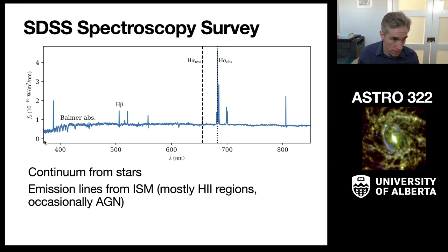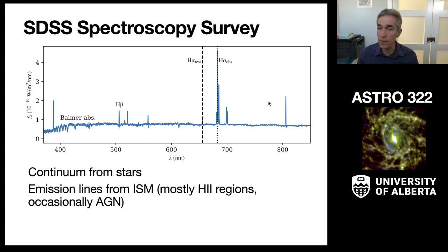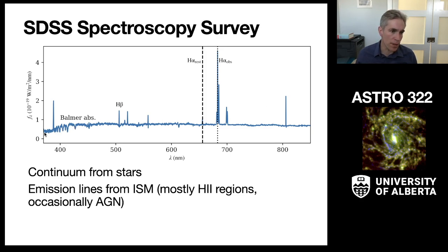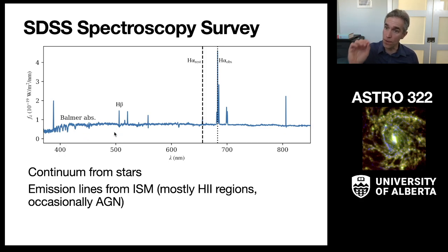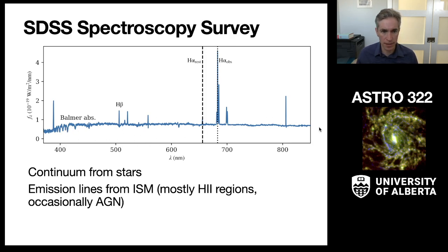This is the optical section of the spectrum, with flux density in watts per meter squared per nanometer. You see a bunch of spectral features: emission lines from the interstellar medium, typically from HII regions, and sometimes from the AGN in the centers of galaxies. The continuum underneath is measuring the stellar continuum, and you can see absorption lines from the underlying stars — those are the stellar photospheres. So the basic signal is the starlight, and the very narrow spectral features are the interstellar medium.